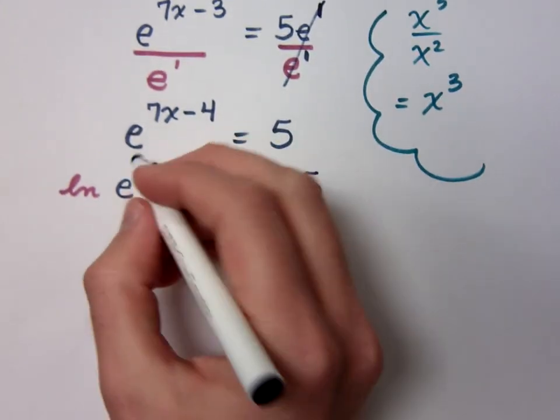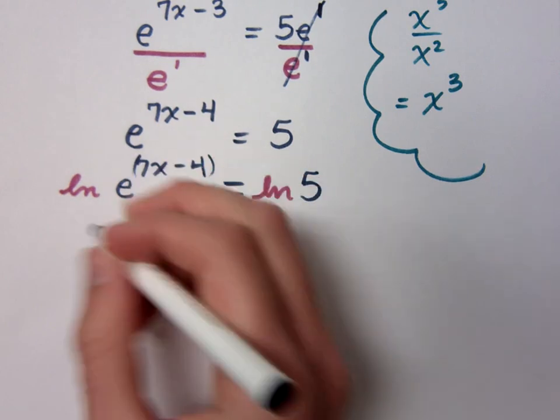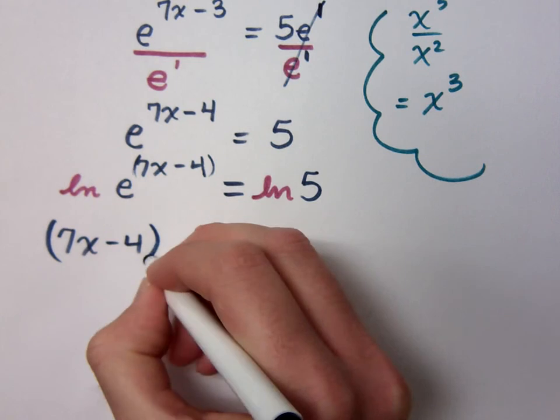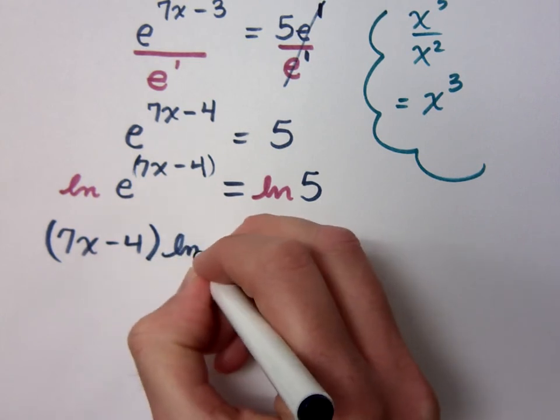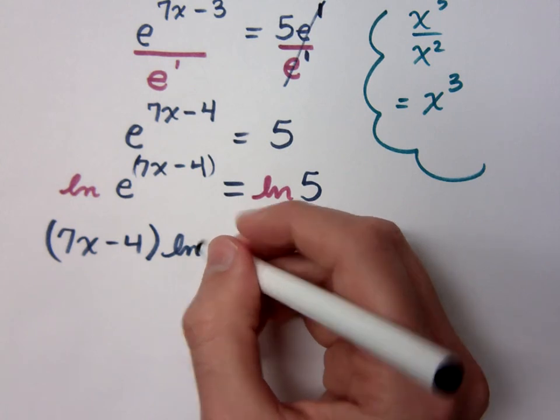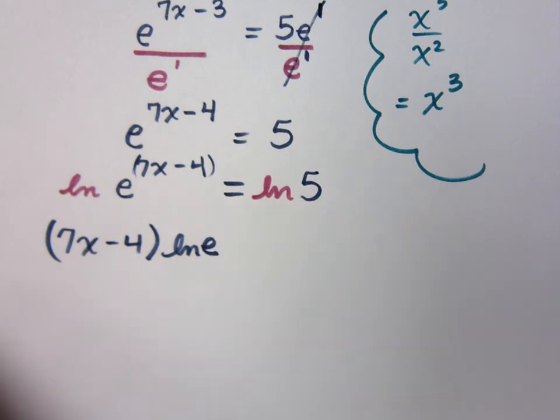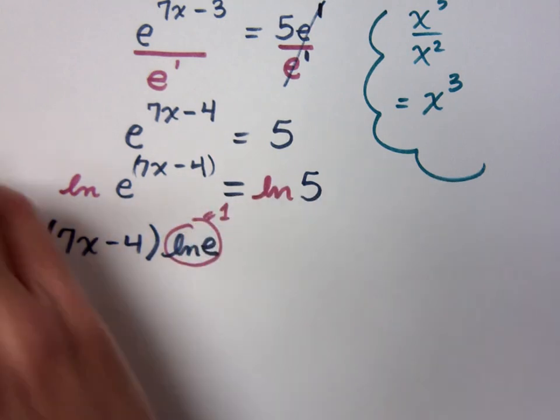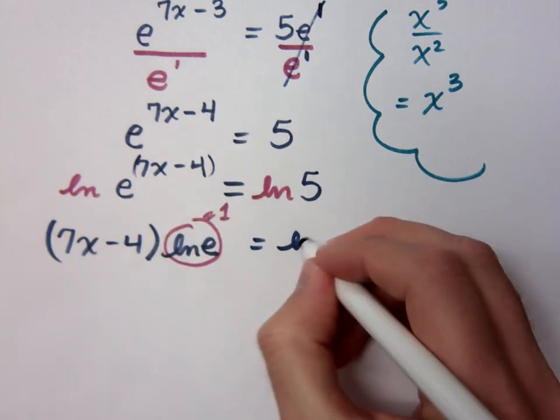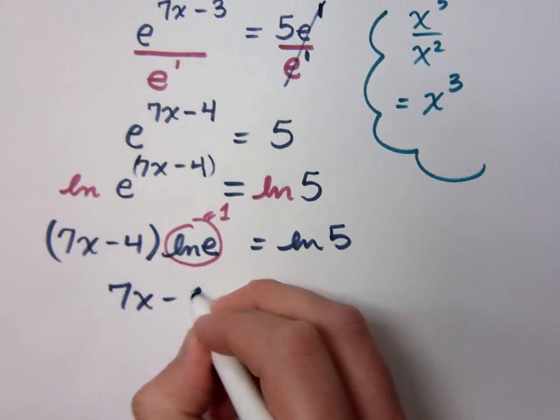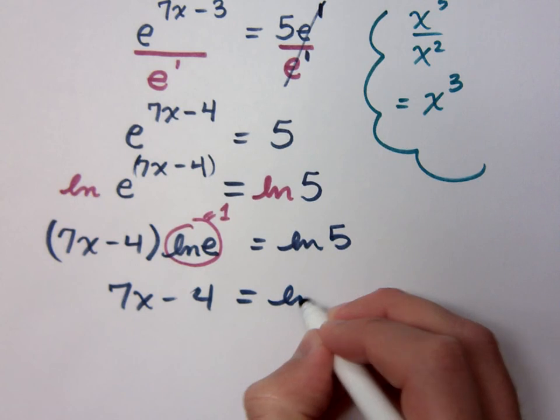Now here, I can take the 7x minus 4, just like we did yesterday, and write that out front. Whenever I do this though, I need to make sure this is in parentheses, times the natural log of e. Do I need to write natural log of e? No. Why not? Because it cancels it. It's log e of e, so it just cancels it. Right. So this guy right here equals 1. So 7x minus 4 equals the natural log of 5.